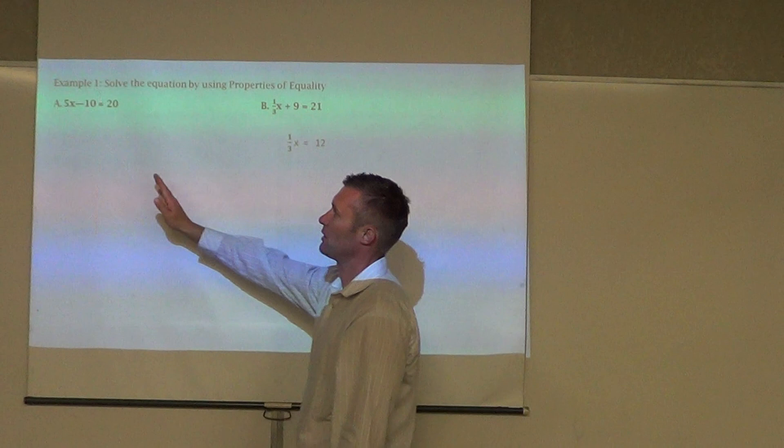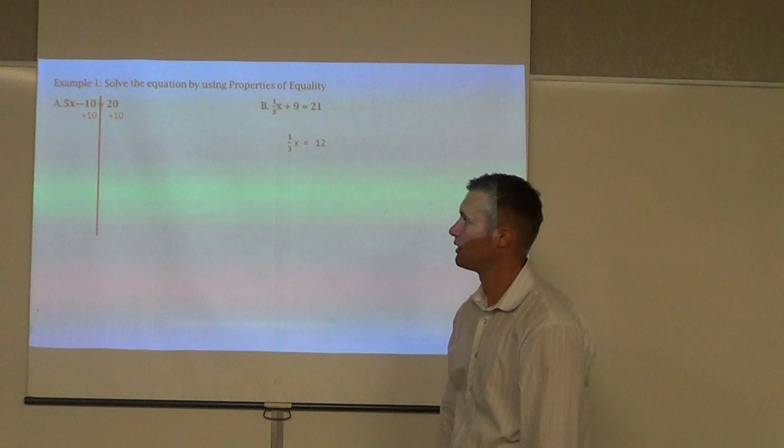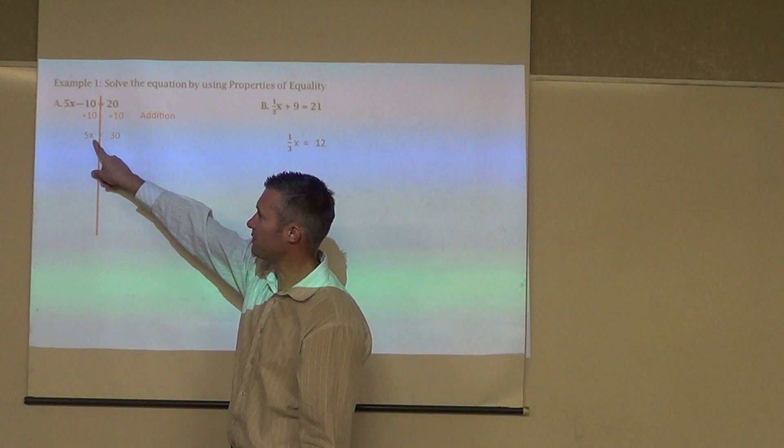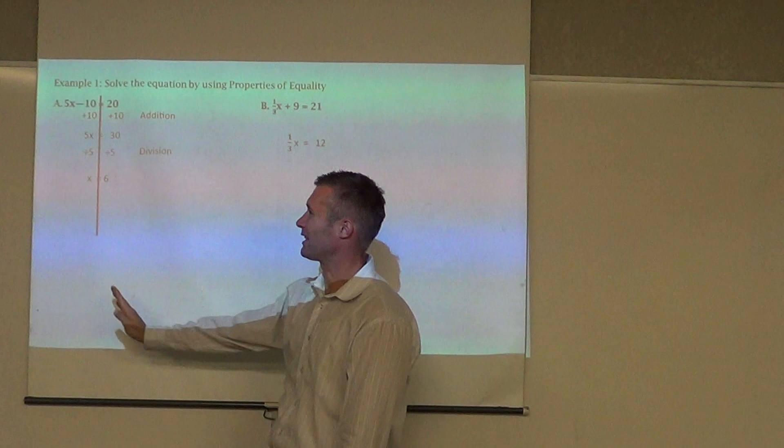So I do the same thing. Again, I'm going to go a little bit quicker, draw our line. In order to get rid of that 10, I have to add 10. Then I would divide by five, so it's multiplying by five, so the opposite of multiplication is division, so divide by five. And whatever I do to one side, I do to the other.